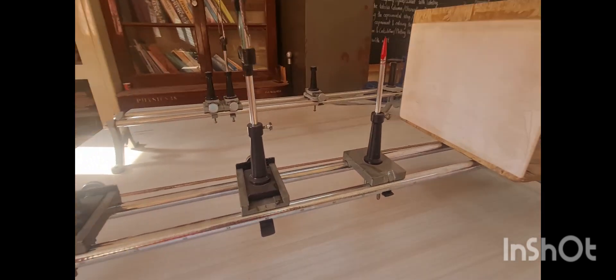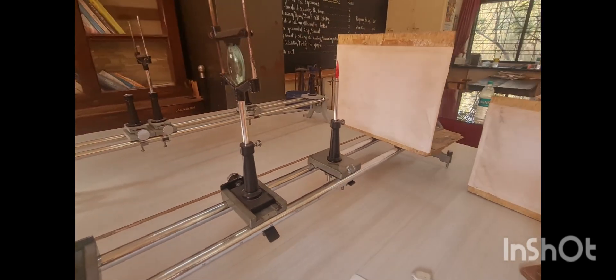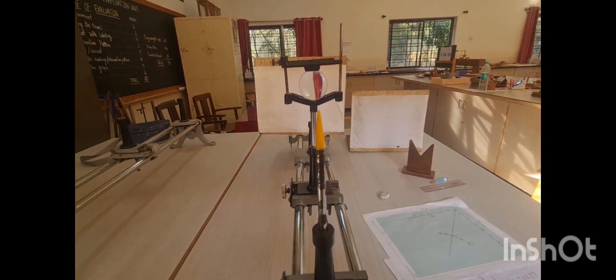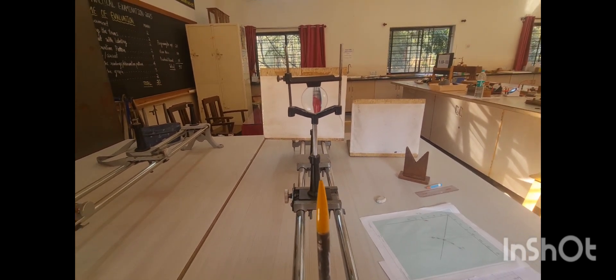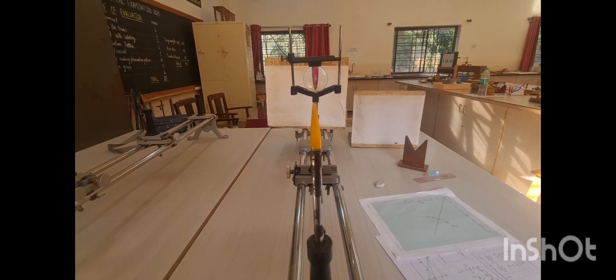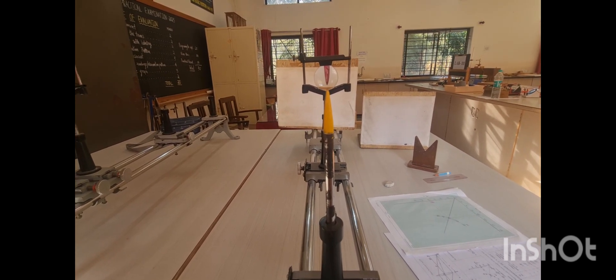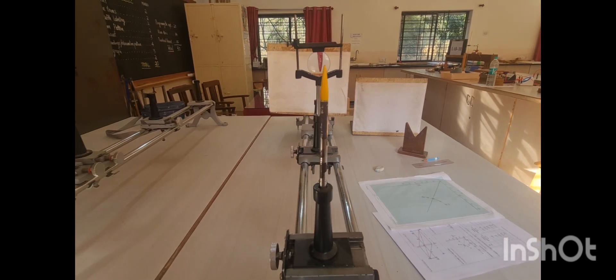After setting a certain object distance, here we have taken the object distance as 20 centimeters. On the other side, you can see the inverted image of that object. Another pin, which is acting as a screen, is called the image pin.